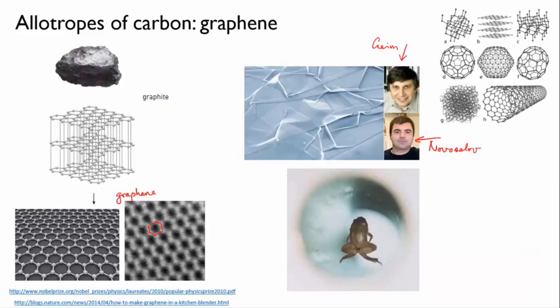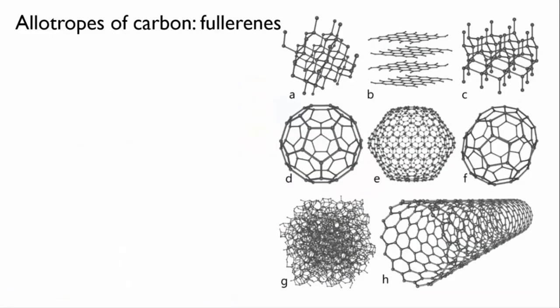Apart from graphite and diamond, there are still more allotropes of carbon. A number of them are versions of graphene, where the single sheet has been folded around to form balls or tubes.